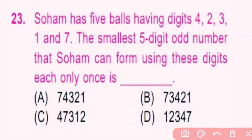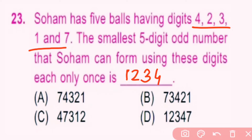Question number 23. Soham has 5 balls having digits 4, 2, 3, 1 and 7. The smallest 5-digit odd number that Soham can form using these digits, each only once, is dash. For the smallest 5-digit number, we take the smallest digit 1 first, then 2, 3, 4, and last 7. Since 7 is odd, the smallest 5-digit odd number is 12,347. D is the correct answer.